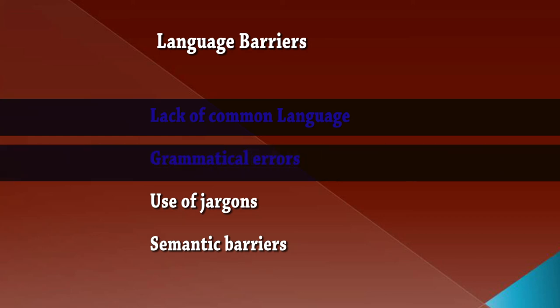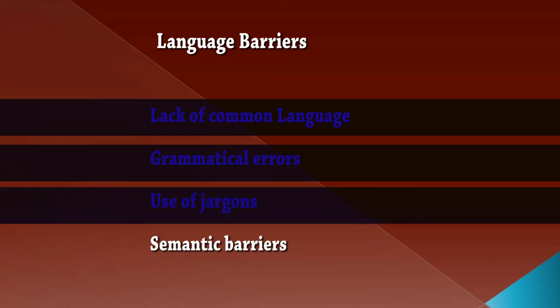Grammatical errors are another language barrier — using incorrect tenses like 'is' instead of 'was' causes a break in communication. The use of jargon — very tough or outdated words — can also be a language barrier when the receiver is not familiar with such language and faces difficulty understanding the sender.